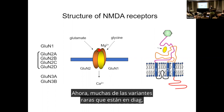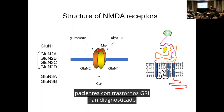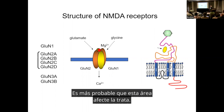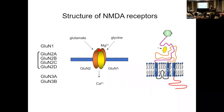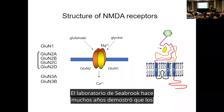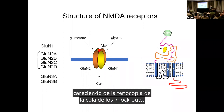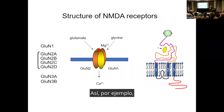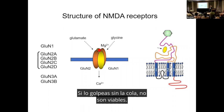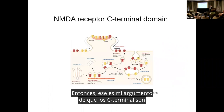A lot of the rare variants that patients with GRIN disorders have been diagnosed with affect channel properties. This area is more likely to affect trafficking. The C-terminal domains we know are important — there's no debate about that — because Bhaskaran's group many years ago showed that knock-ins lacking the tail phenocopy the knockouts. For example, if you knock out N2B, the animals aren't viable. If you knock it in without the tail, they're also not viable.